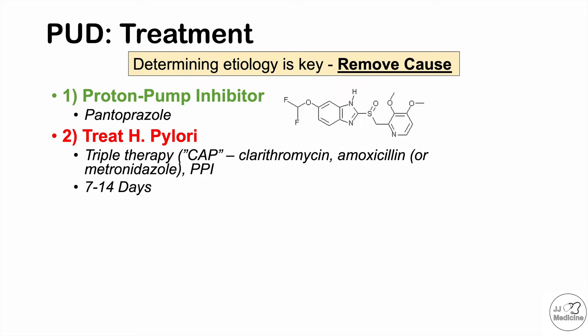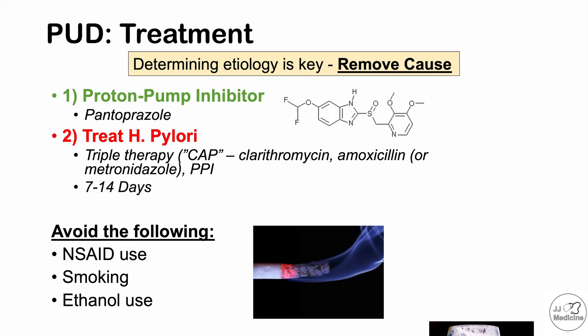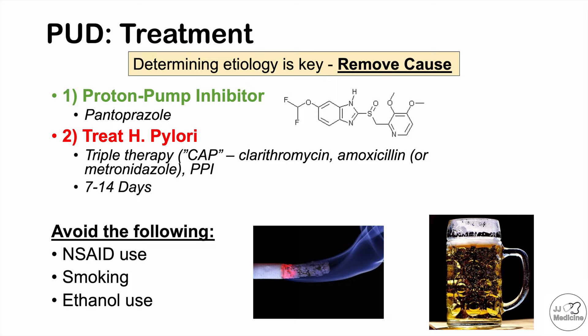It's also important to avoid certain factors: NSAID use, since NSAIDs like ibuprofen can lead to peptic ulcer disease and cause multiple shallow ulcers; smoking, which increases risk and reduces the ulcer's ability to heal; and ethanol use, which can worsen damage to the ulcerated mucosa. In summary, determining the cause is key, proton pump inhibitors help heal the ulcer, triple therapy addresses H. pylori, and avoiding NSAIDs, smoking, and ethanol is essential.